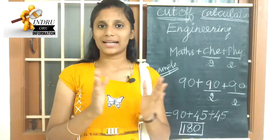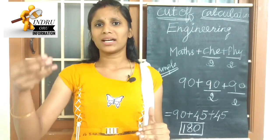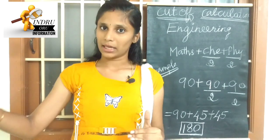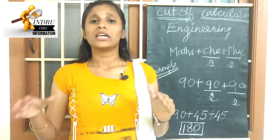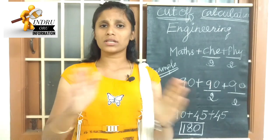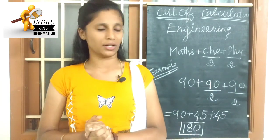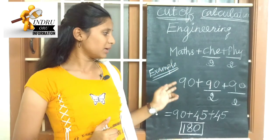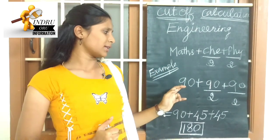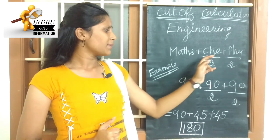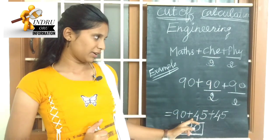First, take the marks like this. For example, take the marks approximately 90. Look at the Chemistry. 90 divided by 2 is 45.